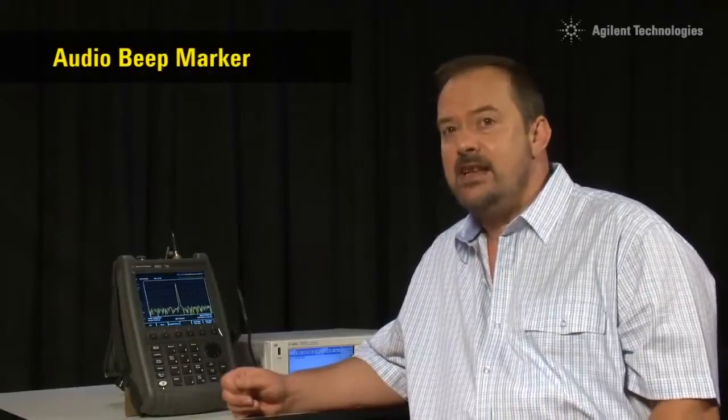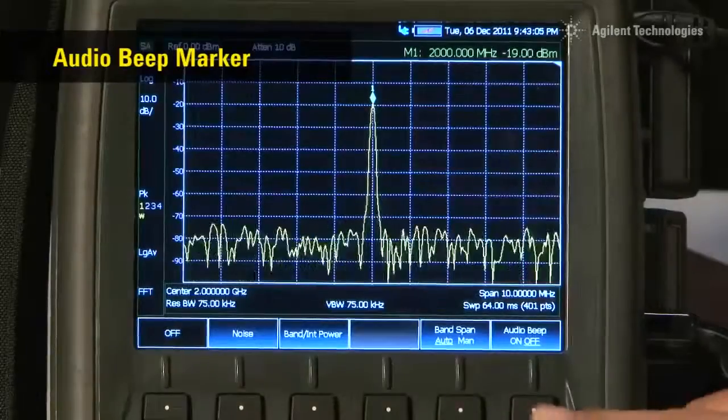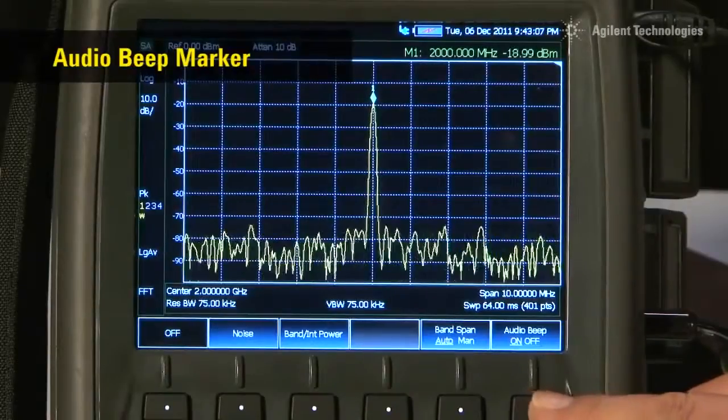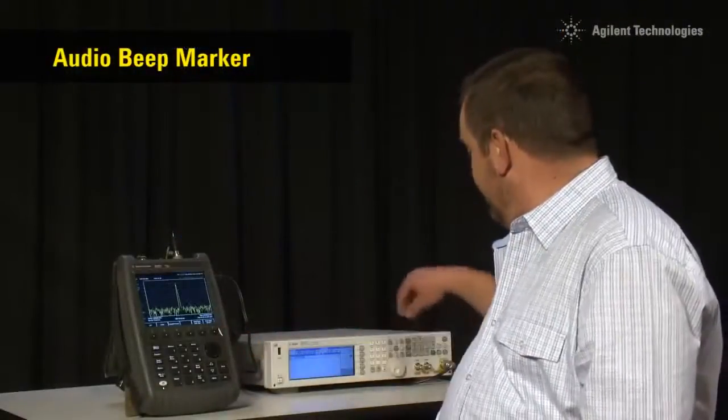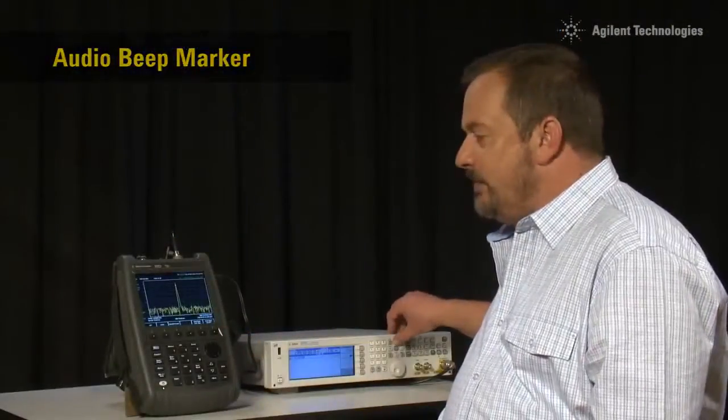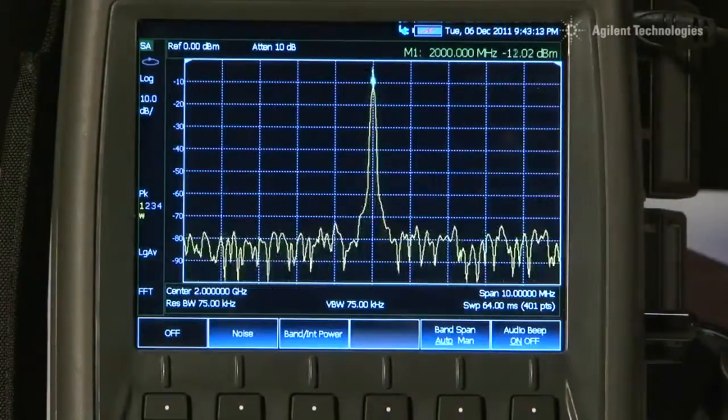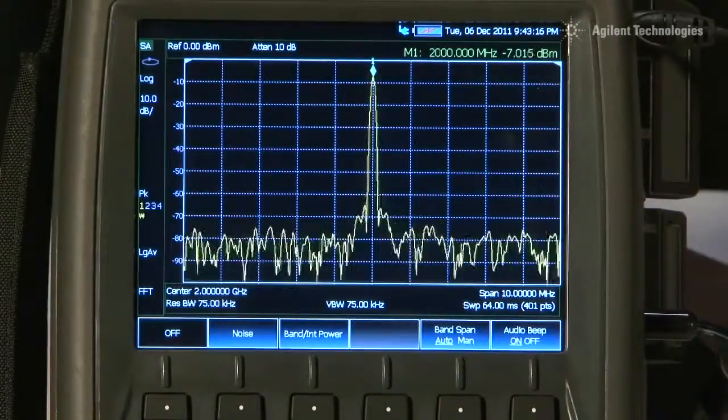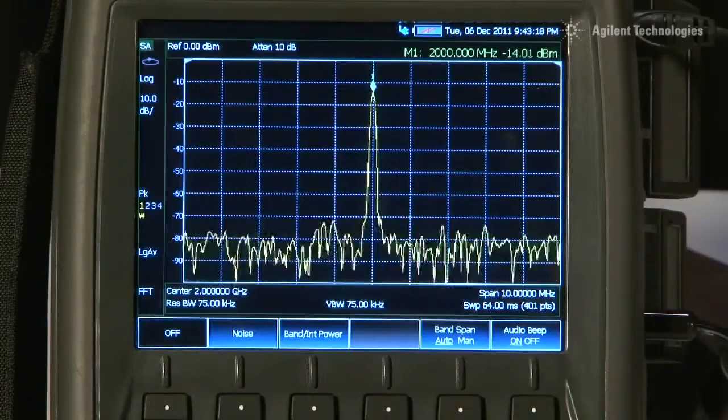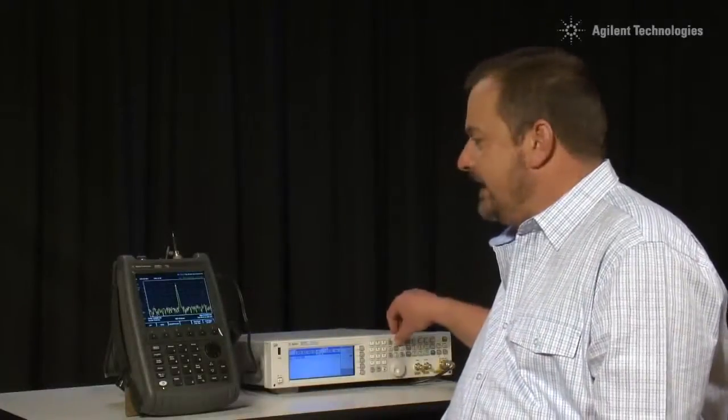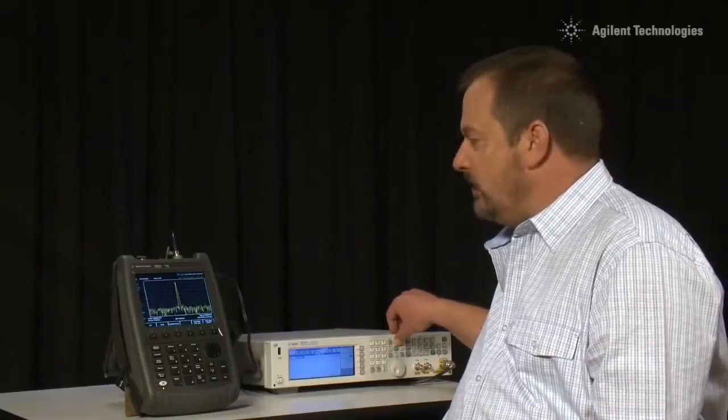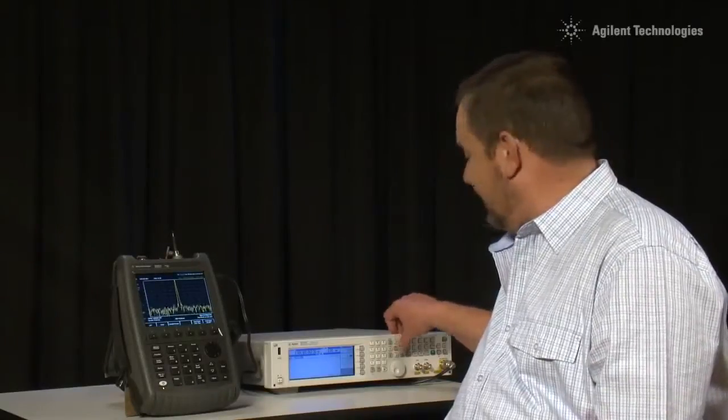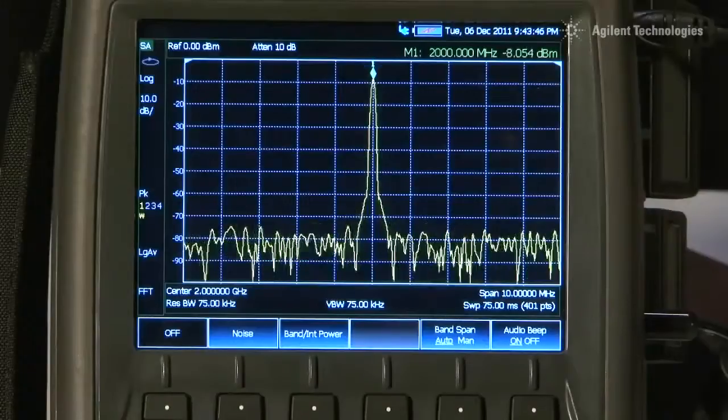And here is a marker function I especially like. If we are aligning a directional antenna, such as a Yagi or a satellite dish, we can turn on audio beep. The pitch and rate of the beep corresponds to the amplitude of the received signal. This makes aligning or peaking an antenna incredibly simple. You do not have to watch the screen of the spectrum analyzer as you are making the adjustments.